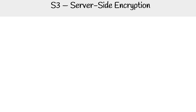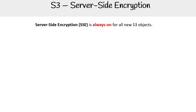All right, let's get a quick overview of the options for server-side encryption, and then we'll dive into each one. Server-side encryption can be abbreviated as SSE, and this feature is always turned on for new objects. At one point, S3 was not server-side encrypted and you had to turn it on, but now it's always on — you don't have to worry about it. It's always going to be encrypted with SSE-S3 by default.